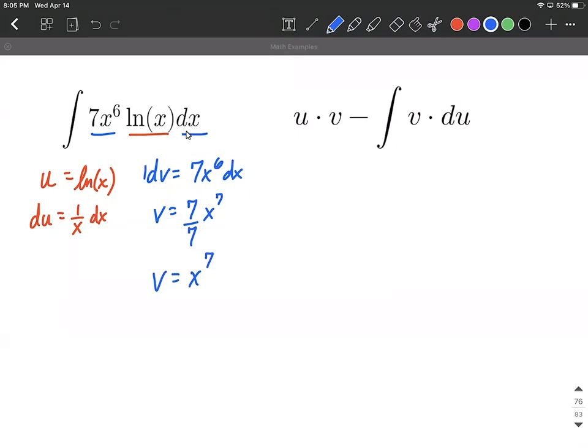Now over to our integration by parts formula. We want to plug in our u, which we defined to be the natural log of x, multiplied by the v that we integrated to find was x to the 7th, minus the integral. We're going to plug in v, which was x to the 7th, and then du, which was 1 over x dx from our formula over on the left-hand side.